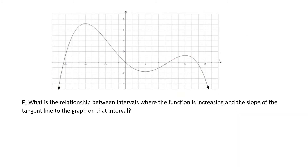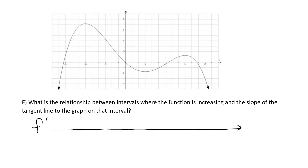What is the relationship between intervals where the function is increasing and the slope of the tangent line on that interval? Here I'm going to make a sign chart number line for the derivative — f prime — to indicate I'm talking about the derivative. We notice that at x = -6, the derivative has a horizontal tangent line, so it equals 0. At x = 3, the tangent line is horizontal, so the derivative equals 0. And at x = 9, the graph has another turning point, so the slope of that horizontal tangent line is also 0.